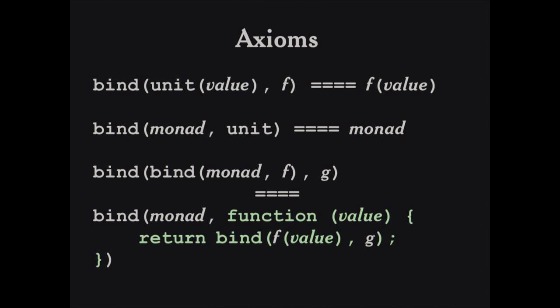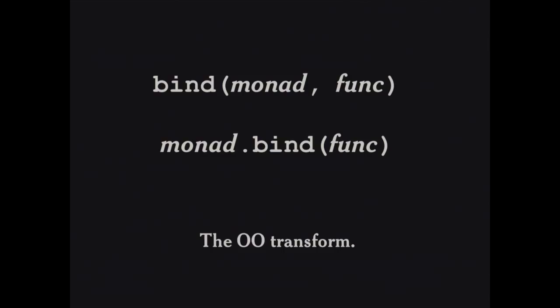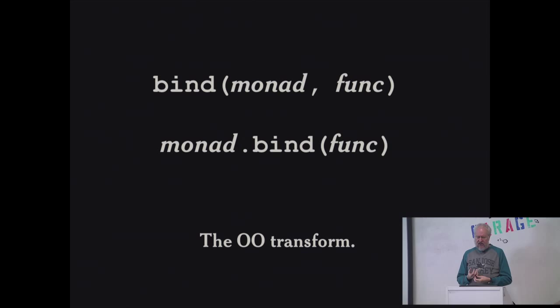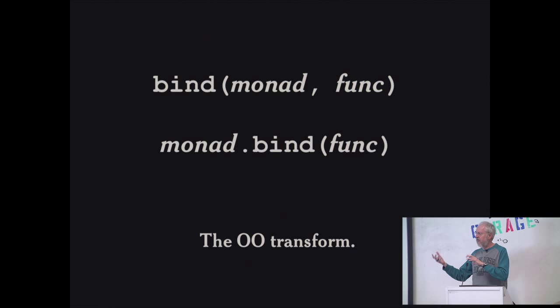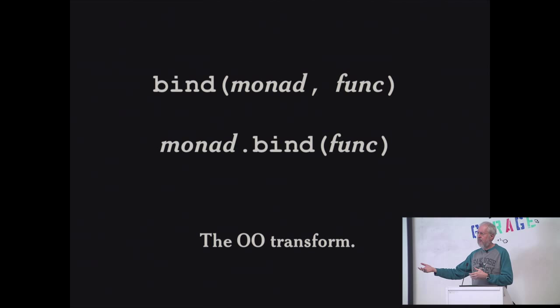We can make it easier to deal with these monads by converting from functional notation into methodical notation. That's a really easy thing to do in JavaScript — everybody does that all the time. You need to understand the mapping between functions and methods. And once you can do that, we can very easily transform the way we invoke the bind method: instead of saying bind passing a monad, we call the monad's bind method.